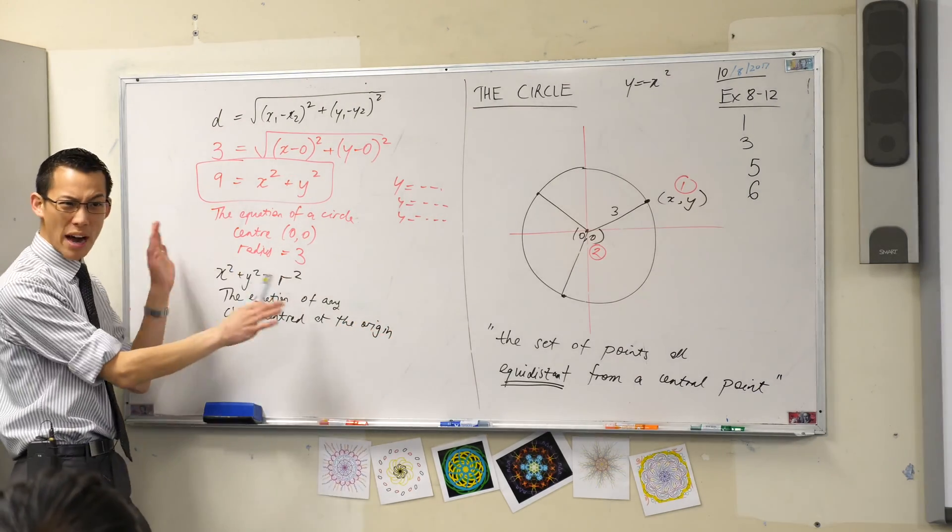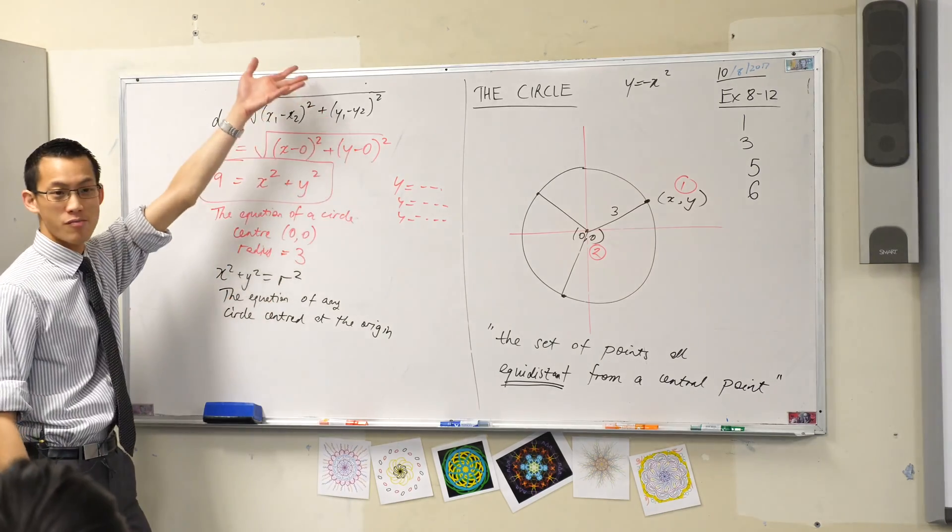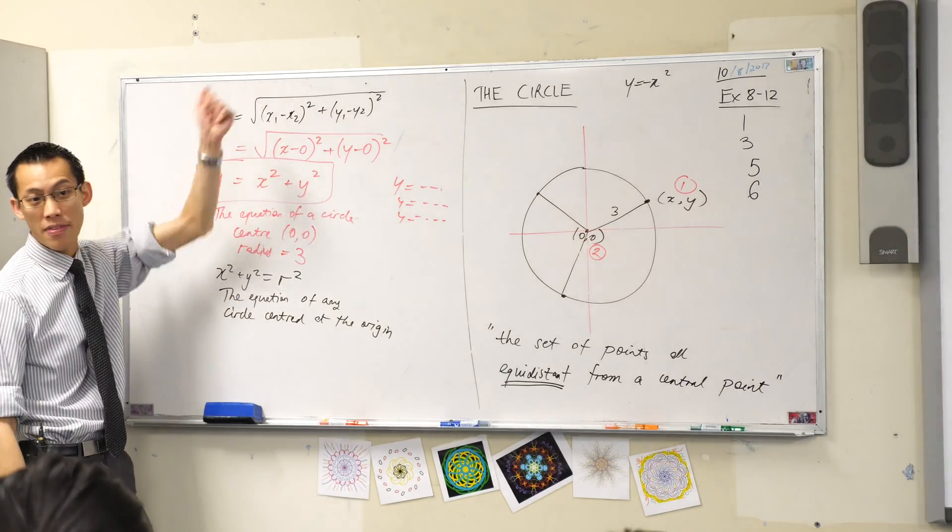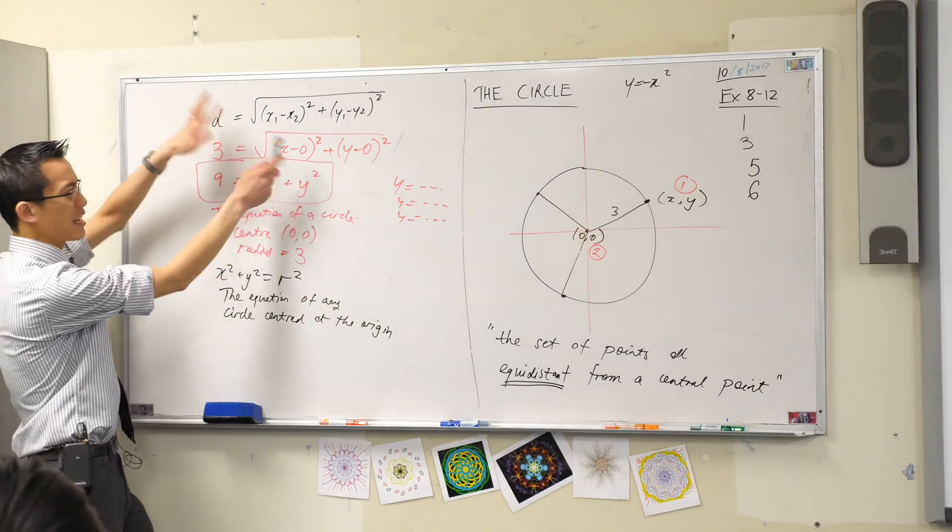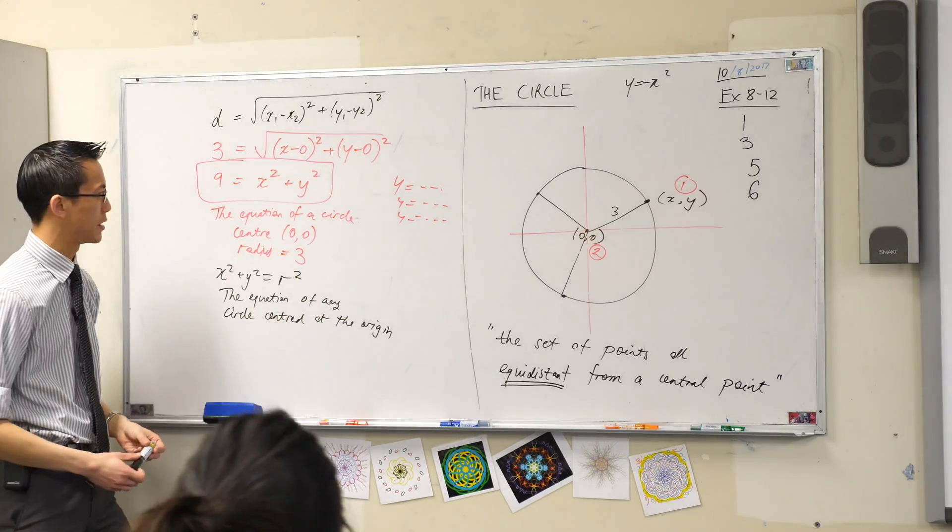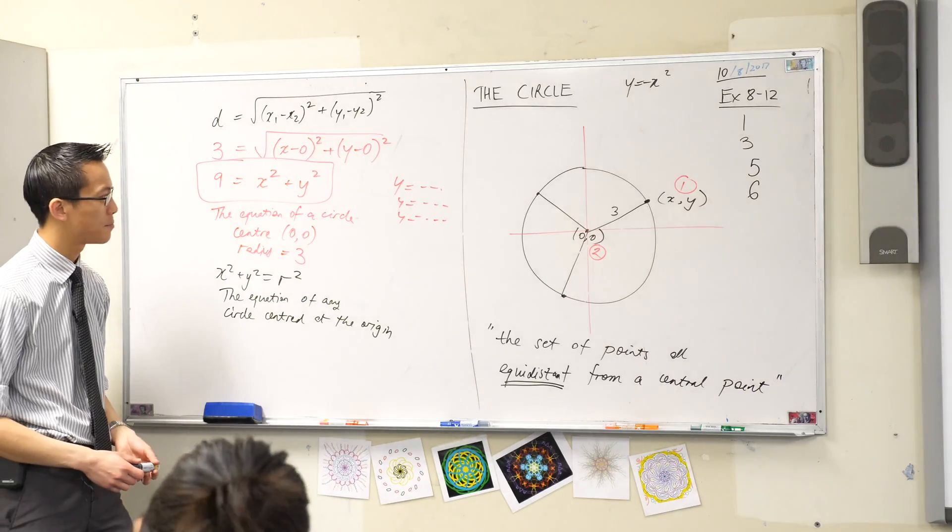So you can see this x squared plus y squared stuff—it comes from this distance formula. It comes from Pythagoras, actually. And the r squared, well, it happened because I didn't want to write the big square root everywhere because that was a bit of a pain. Okay? Got it.